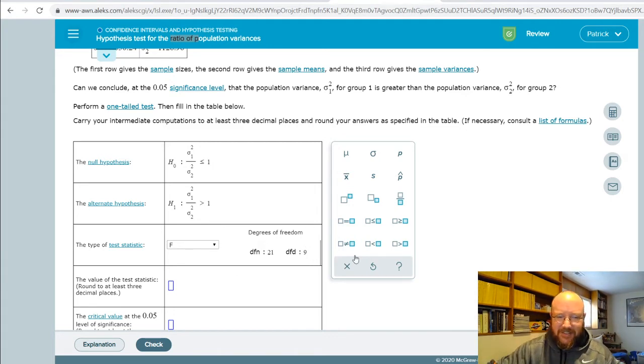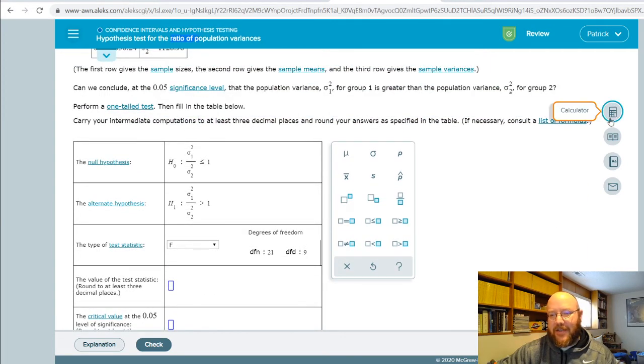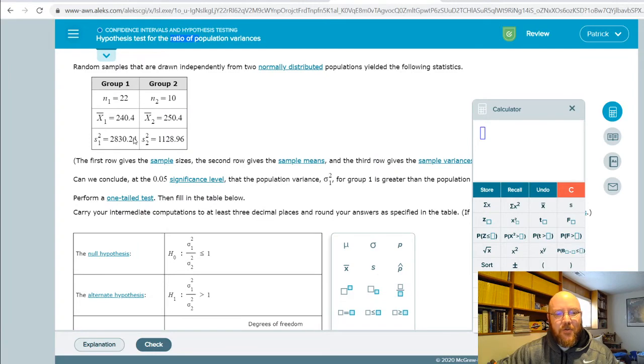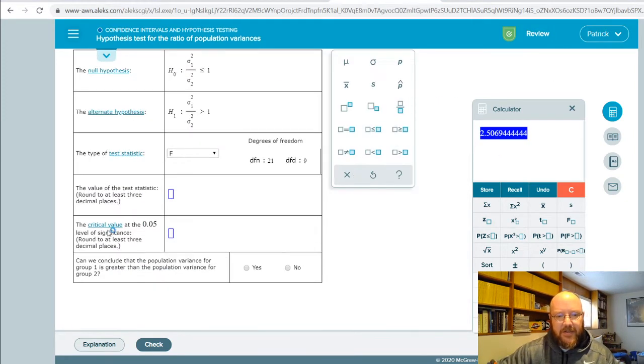Value of the test statistic. Now we just have to calculate the F statistic for these, which is we're going to take this, the variance for our first group, and divide it by the variance for our second group. So let's just do that real quick. 2830.24 divided by 1128.96. There's our F statistic. So three decimal places, 2.507.